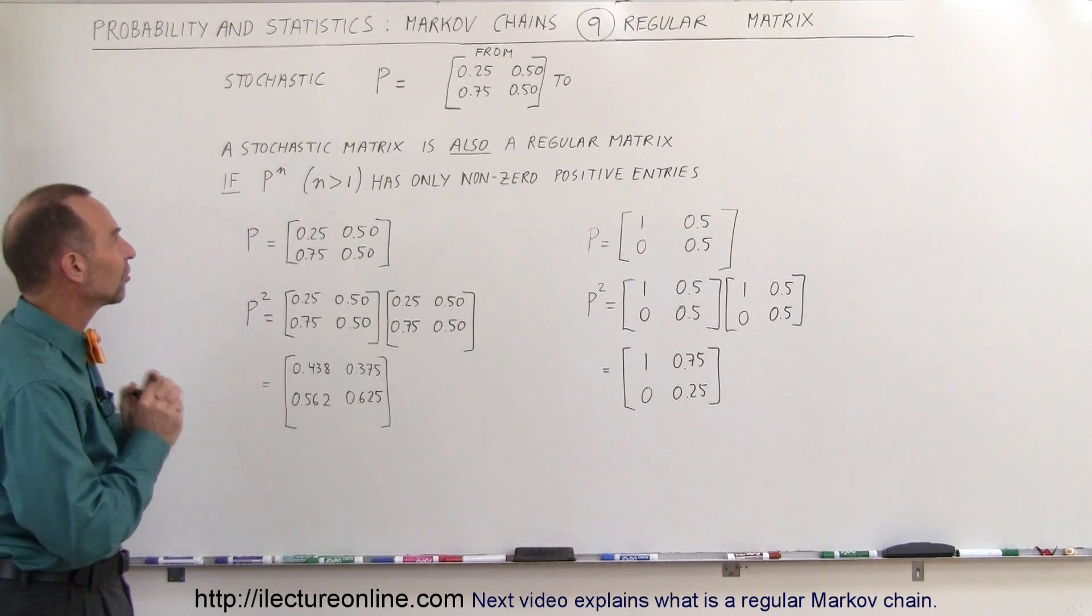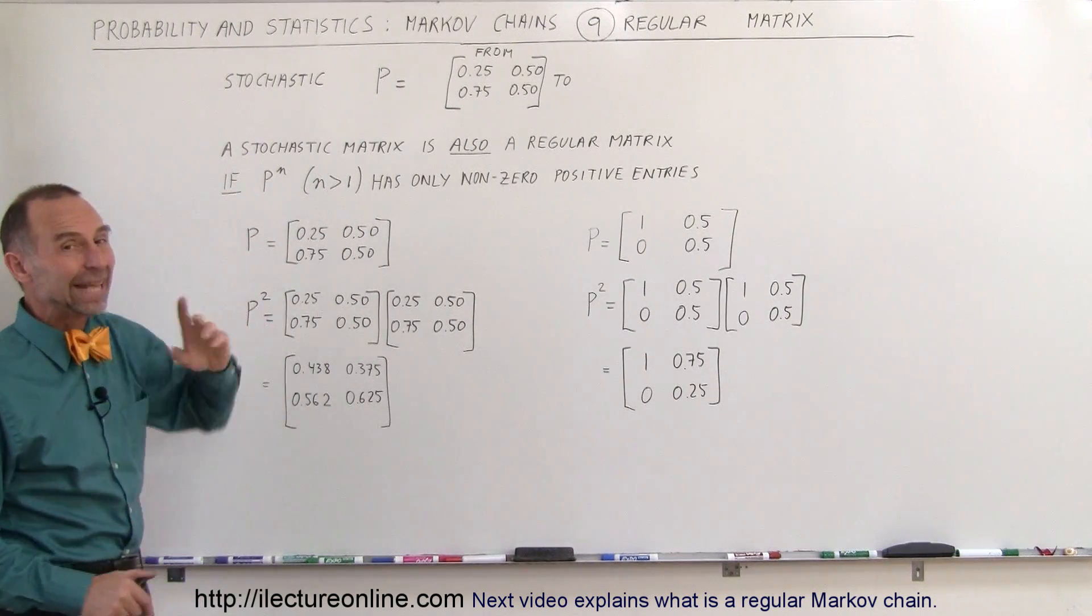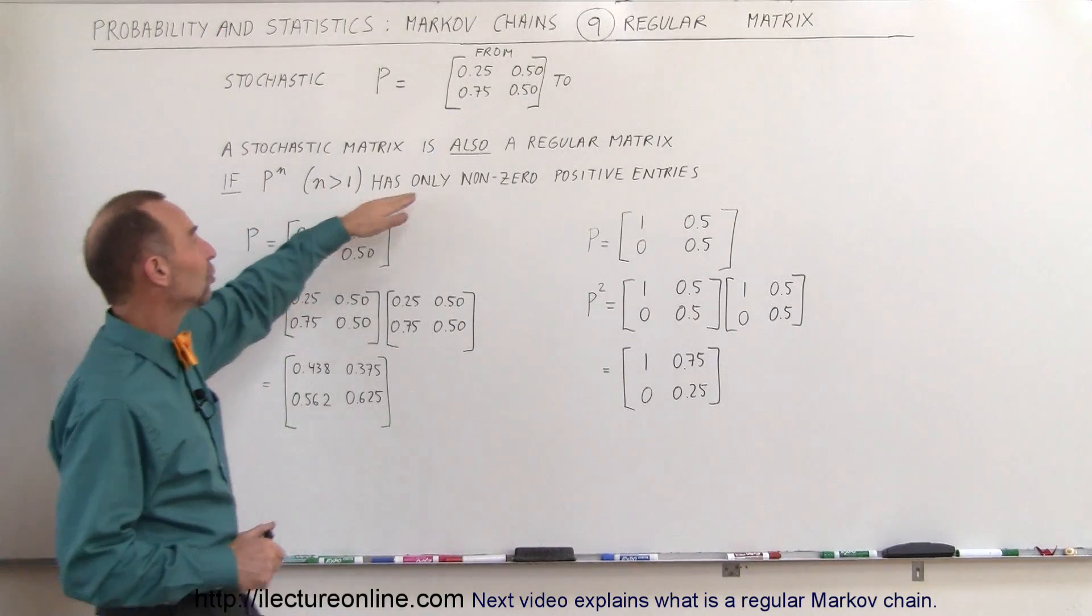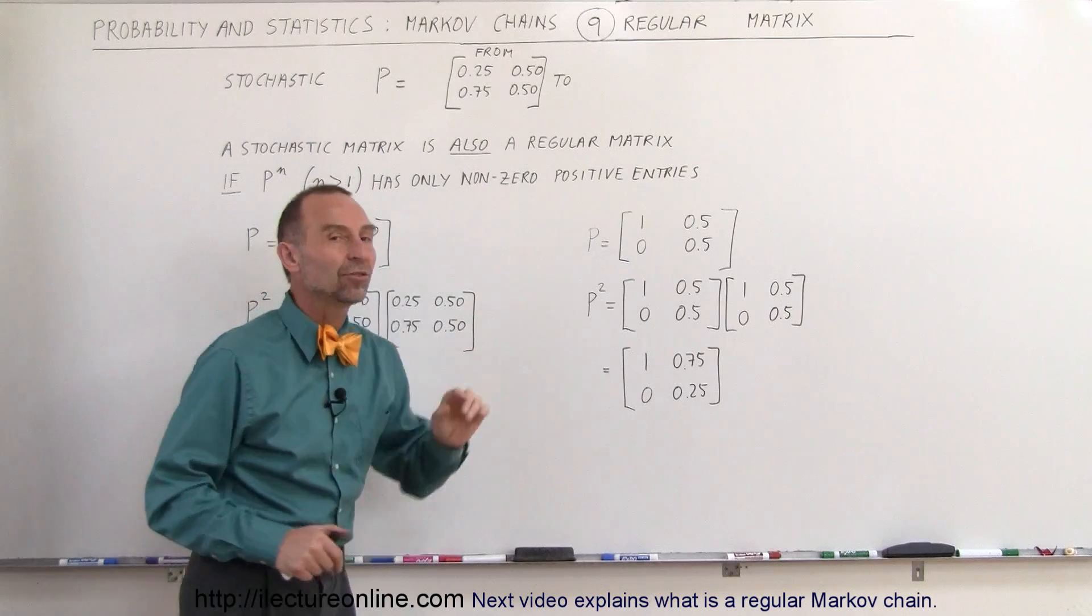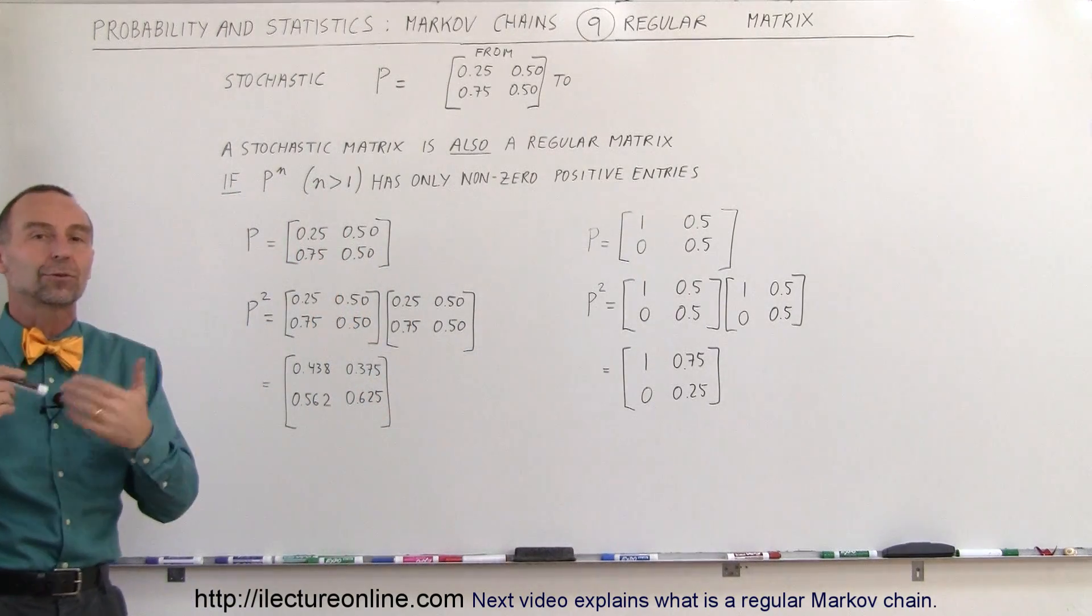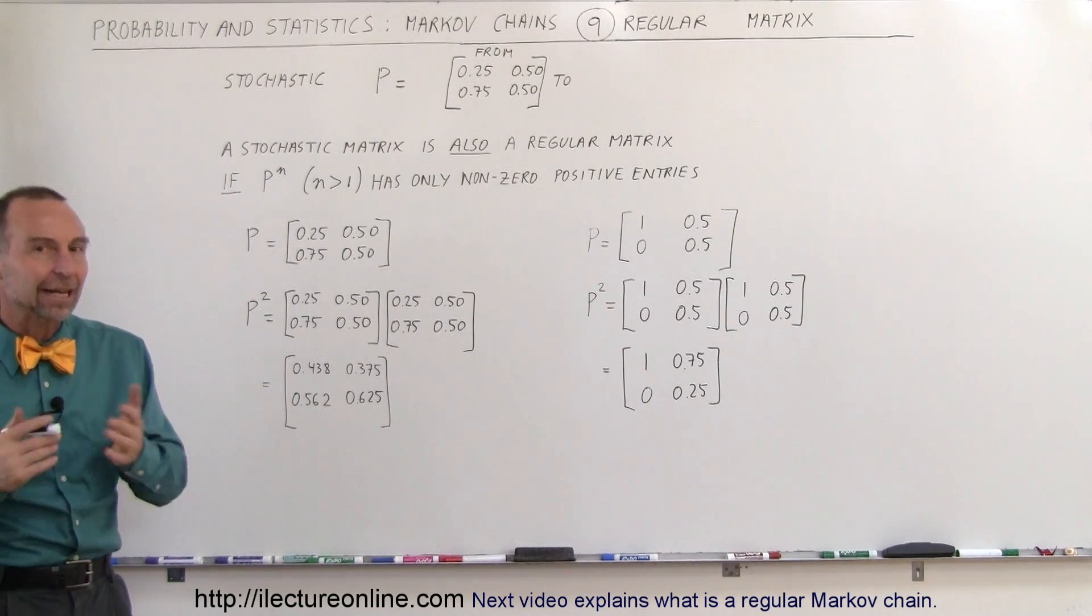Well a regular matrix is defined in such a way that if we take the matrix to the n power, with n being greater than 1, so 2 is sufficient, then it has only non-zero positive entries. So the elements inside the matrix need to be greater than 0, they need to be positive, they cannot be negative, they cannot be zeros.